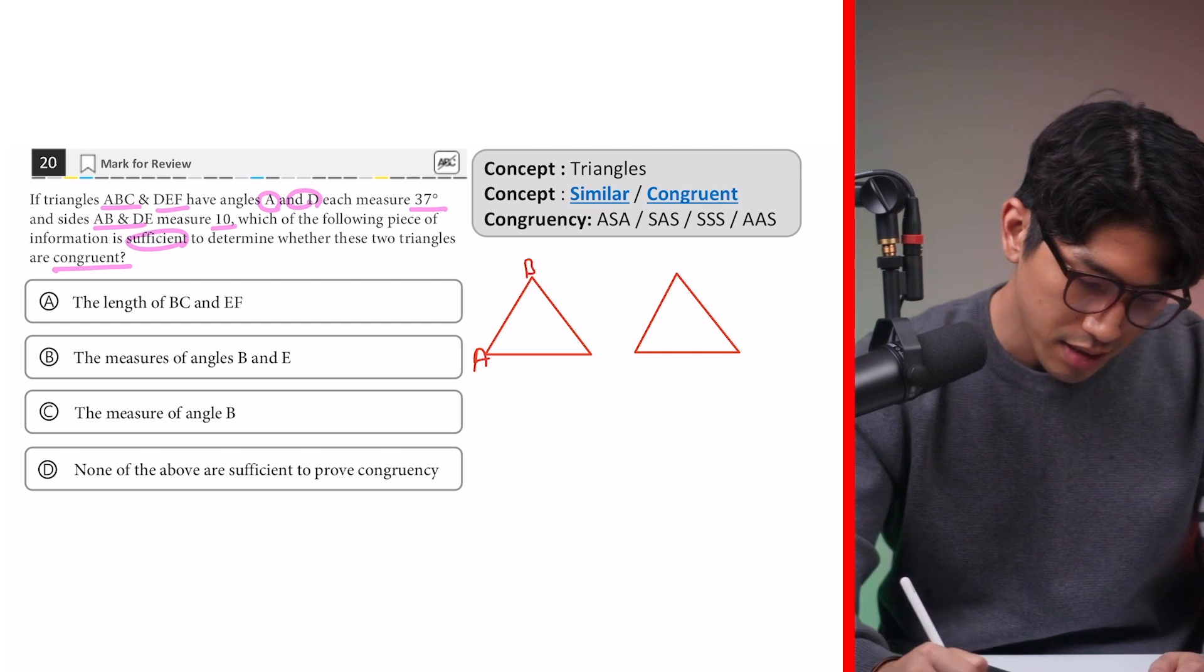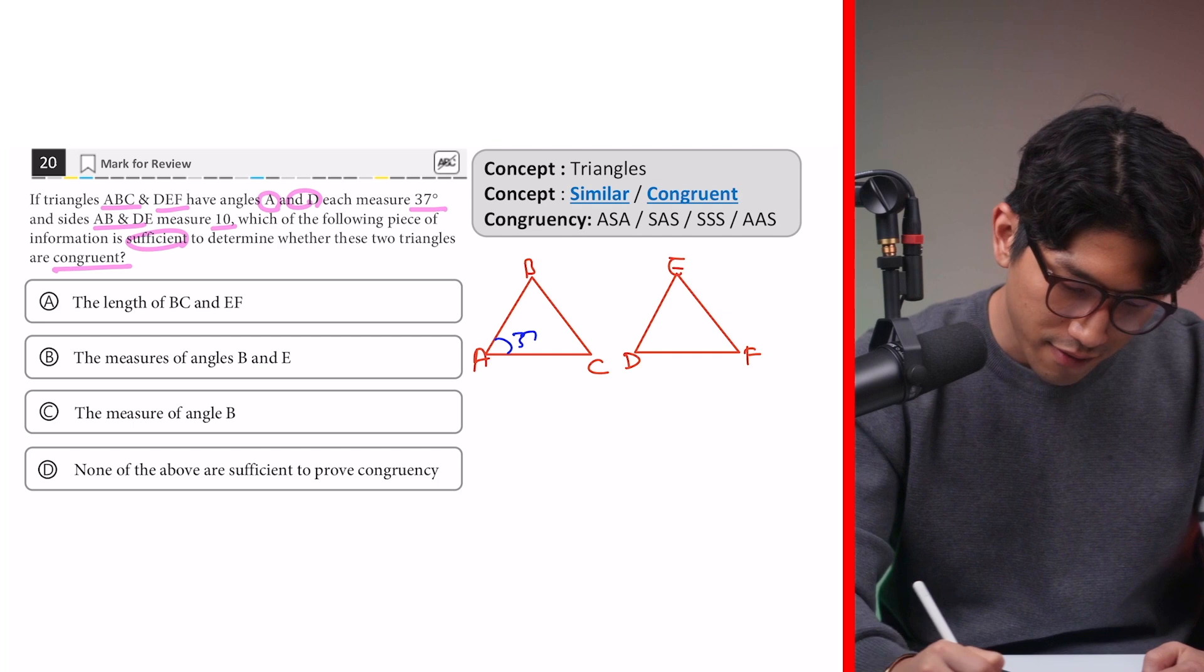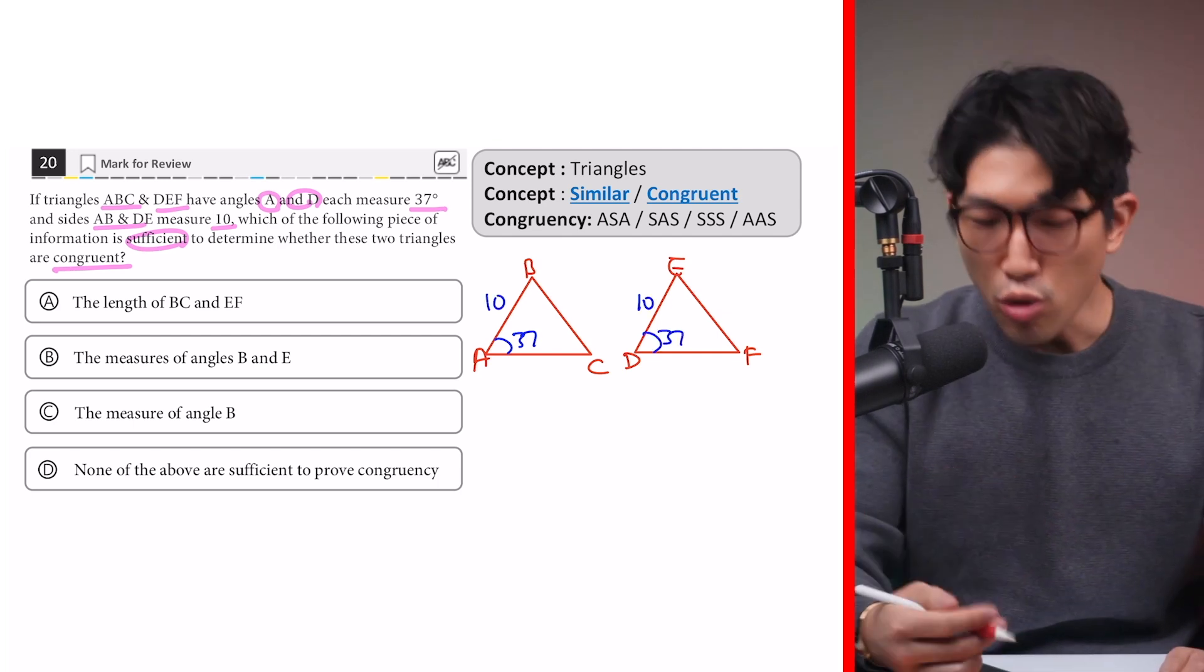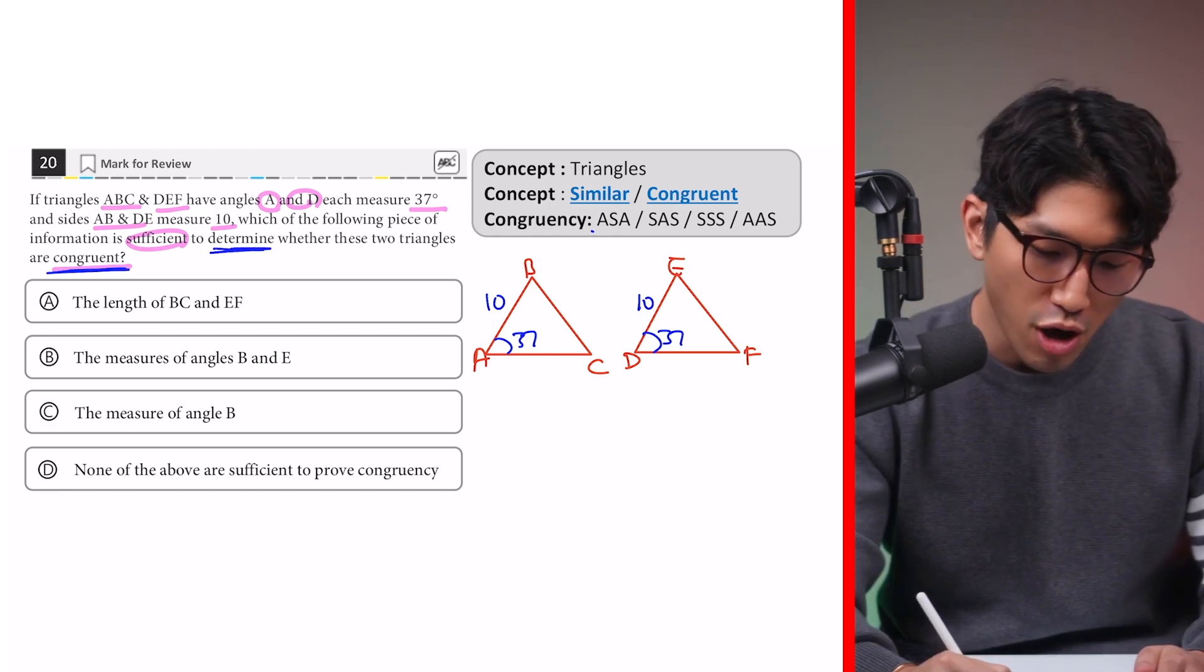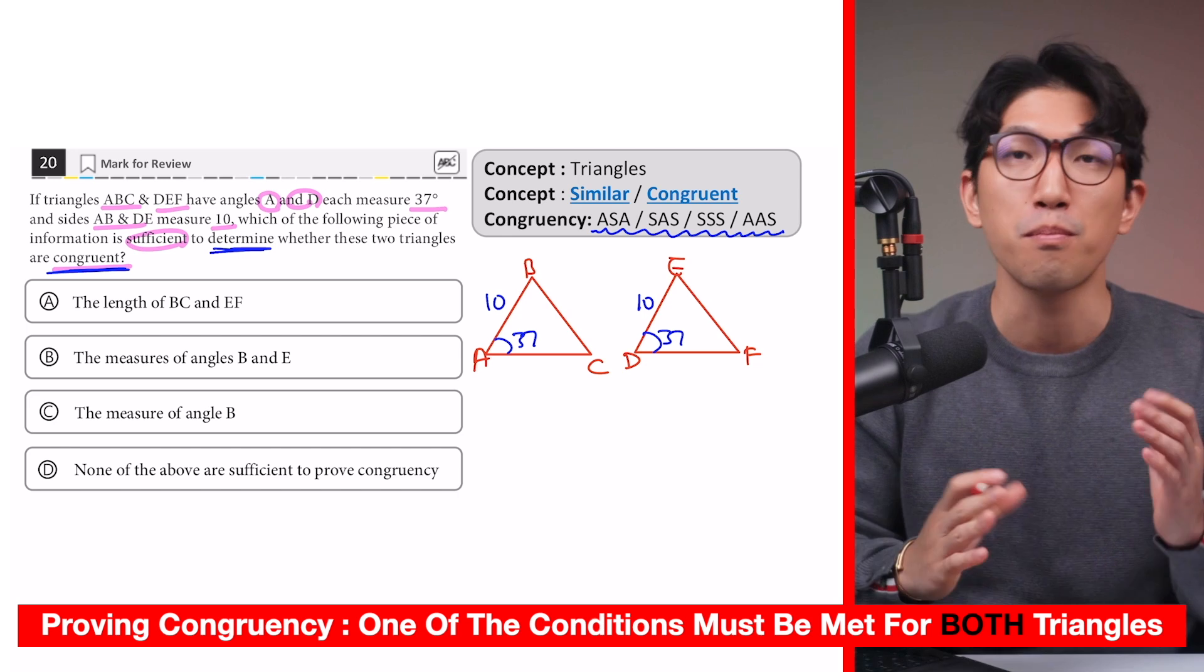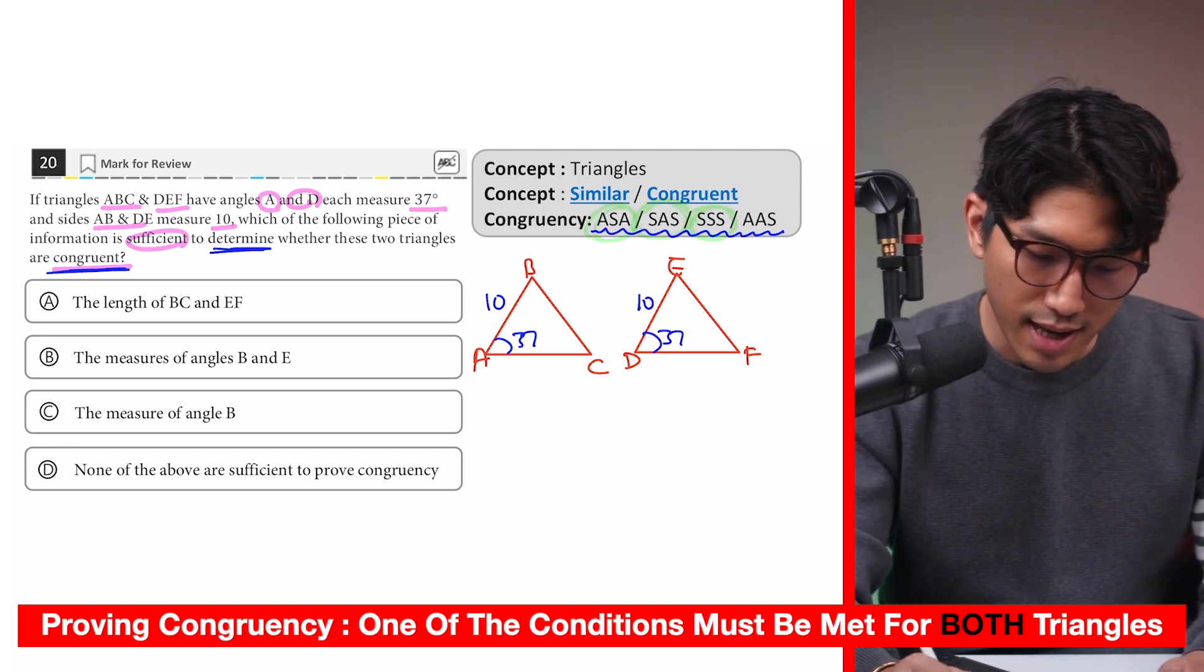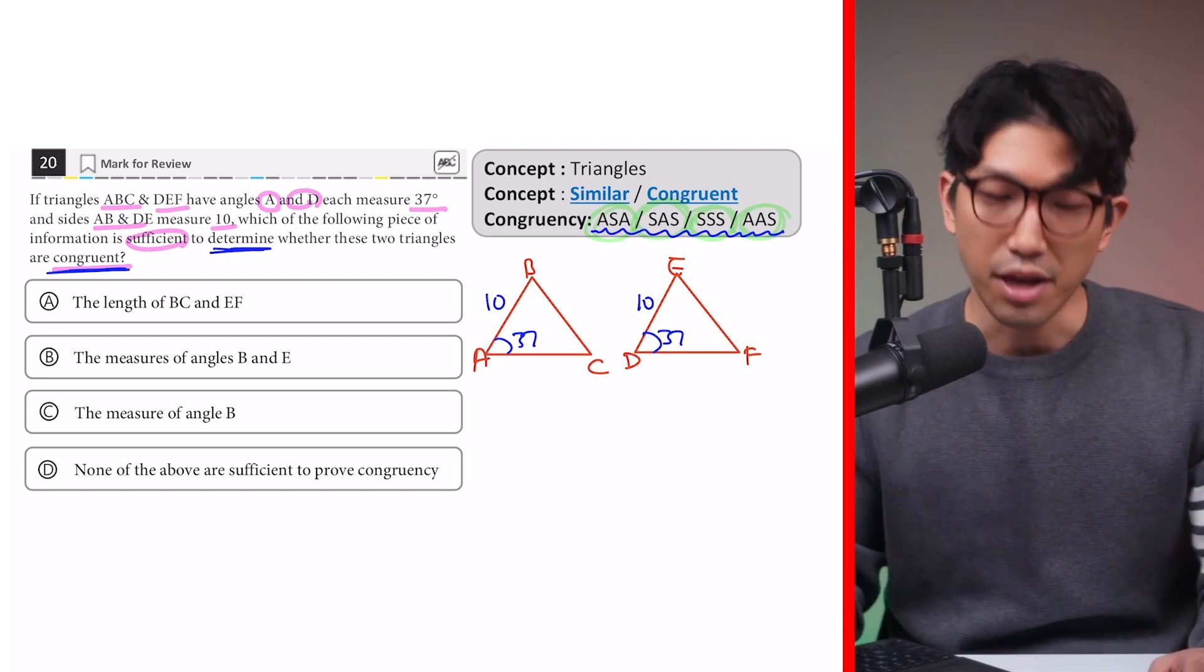We have A, B, C, and we have D, E, F over here. And angle A, D have 37 each, and AB and DE measure 10 each. And in order for you to determine whether these two triangles are congruent or not, you have to know one of these four things for both triangles. Angle-side-angle, side-angle-side, side-side-side, and angle-angle-side. And you probably have heard of this at some point in your life. And here's how this works.